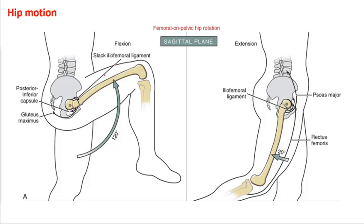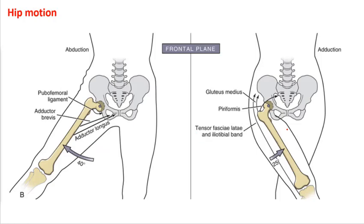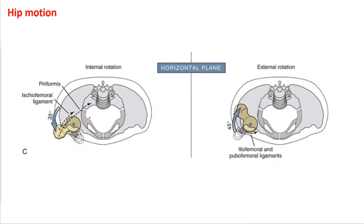When you go into hip flexion, you're putting tension on the glute maximus and the posterior inferior capsule, and the femoral ligament is being stretched. To appreciate when you're attempting to stretch your hamstrings, consider what else you're actually stretching in those activities. Here's your frontal plane movement for abduction and adduction, and then internal external rotation.